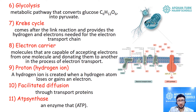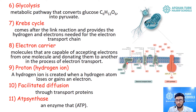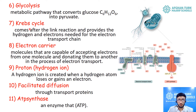Let's first become familiar with the Krebs cycle. As you see in this picture, you can see different types of ions and structures. These different circulations of ions are what we will study in cellular respiration. The Krebs cycle comes after the link reaction and provides the hydrogen and electrons needed for the electron transport chain.